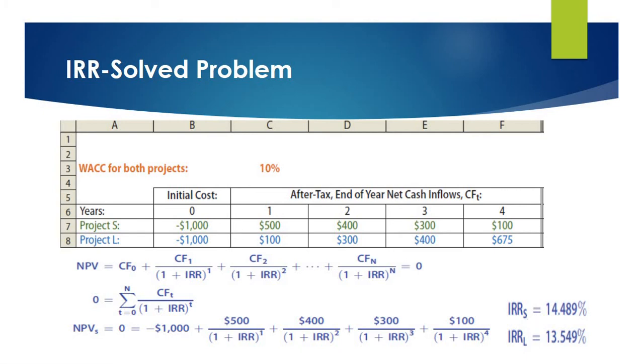Now, if we compare these two results of Project S and Project L, the IRR of Project S is more than Project L. If the projects are independent, we can accept both projects.